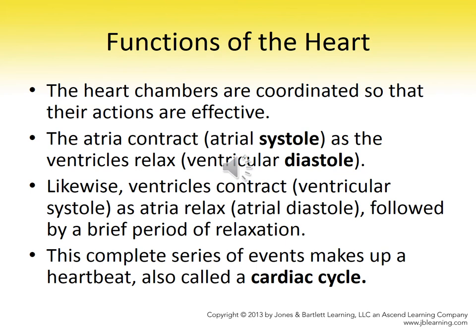We measure the contraction and relaxation of the heart — we call that systole and diastole — and these are the two numbers we get when we take a blood pressure. The top number is systole, representing contraction, which is why it's always higher — historically 120. The bottom number is diastole, historically 80. Textbook normal is 120 over 80.